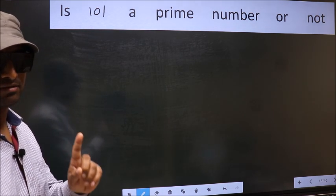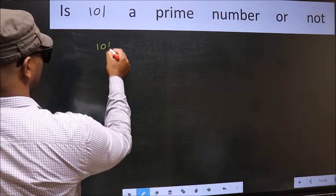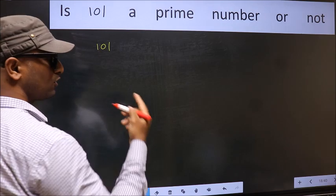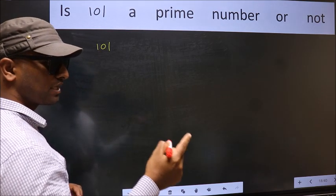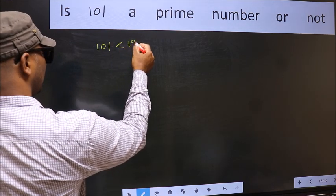For that, step 1. Given number is 101. This is close to which perfect square number? This is close to 121.